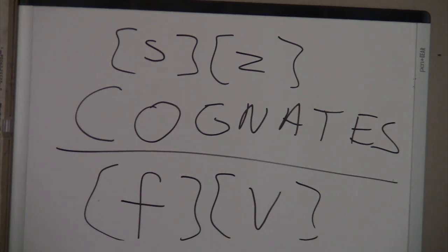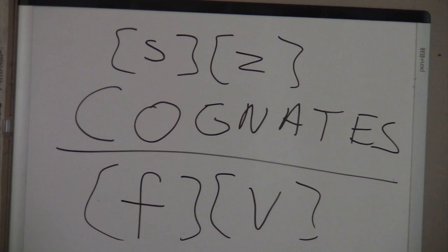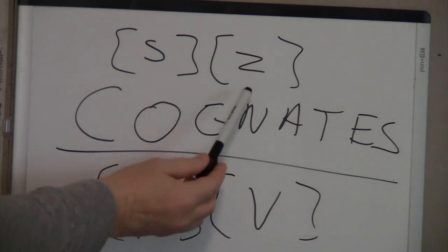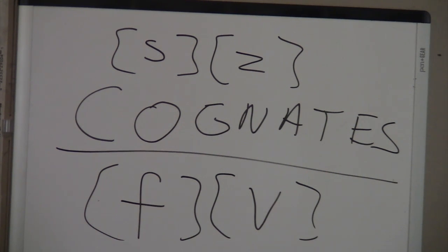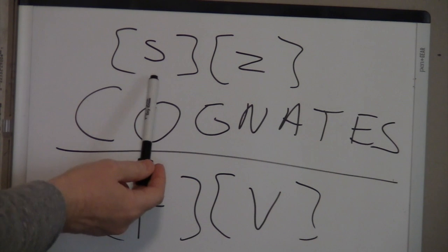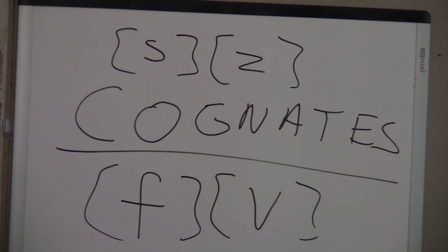Going back and forth between F and V again, you'll notice that your articulation doesn't change. How you're forming the F sound is exactly the same with the articulators as the way you're forming the V sound. The only thing that changes is you don't feel vibration on the F, but you do feel vibration on the V. Cognates, by definition, are two consonant sounds made exactly the same way with the articulators — the only difference is one is unvoiced, like F and S, meaning the vocal folds are apart and not vibrating, and one is voiced, like V and Z, meaning the vocal folds are together and vibrating.